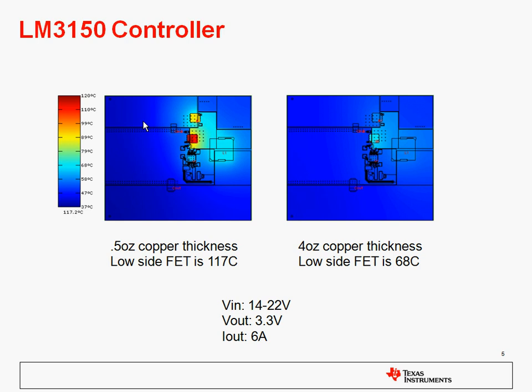Here's an example of a design that has 14 to 22 volts input, 3.3 volts output at 6 amps. This is a LM3150 FET controller with two external FETs. On the left side, a simulation was run using half-ounce copper, which is very thin copper, and in this case the low-side FET was 117 degrees C. We ran the same simulation using thick copper at 4 ounces and that low-side FET temperature dropped all the way down to 68 degrees C. This is one of the things that allows you to visualize how to correct design problems.